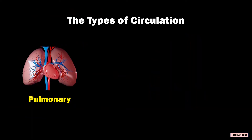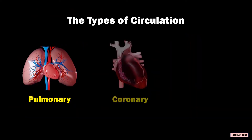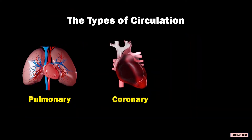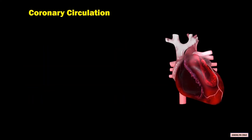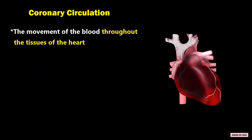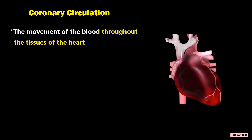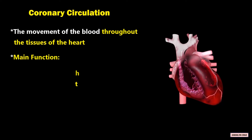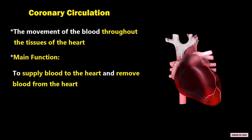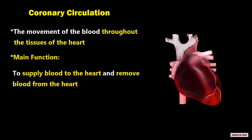The second circulation is coronary circulation. Coronary circulation is the movement of blood throughout the tissues of the heart. The main function is to supply blood to the heart and remove blood from the heart.